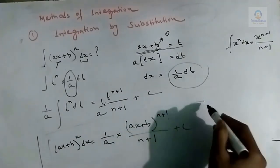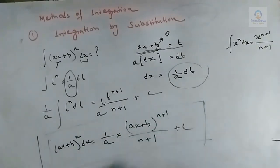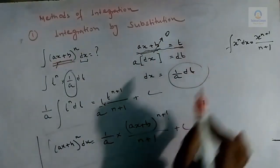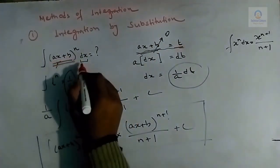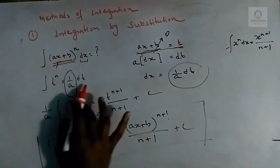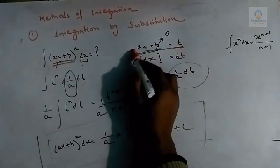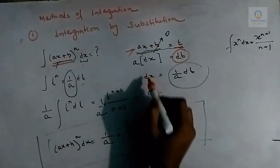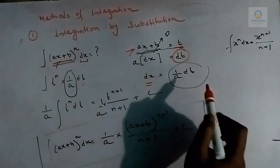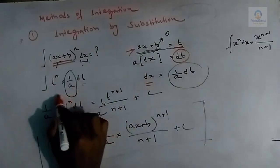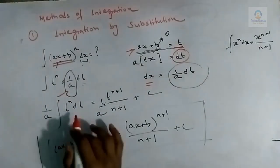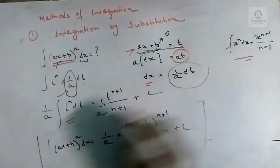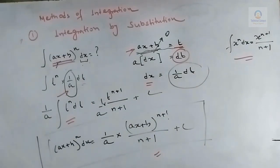So the final answer is (1/a) · (ax + b)^(n+1)/(n+1) + C. This is the method of integration by substitution — we substituted ax + b with t, differentiated to get dx = (1/a)dt, applied the standard formula, and substituted back to get the result.